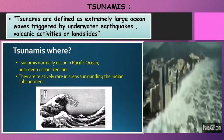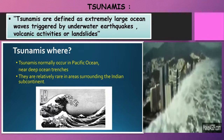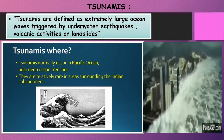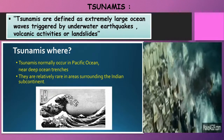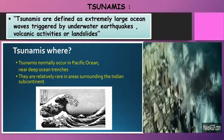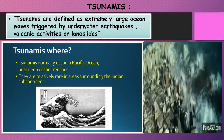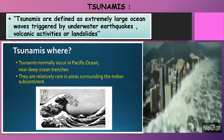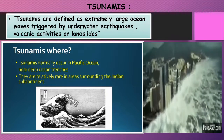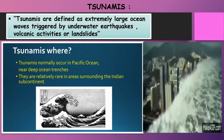Now let us see what tsunamis are. Tsunamis are defined as extremely large oceanic waves triggered by underwater earthquakes, volcanic activities, or landslides. Earthquakes and volcanic eruptions occurring on the ocean bed give rise to tsunamis. Tsunamis normally occur in the Pacific Ocean near deep oceanic trenches and are relatively rare in areas surrounding the Indian subcontinent.